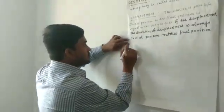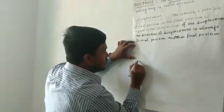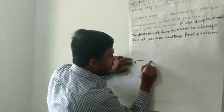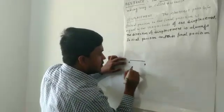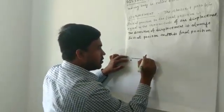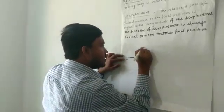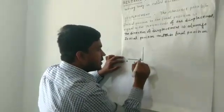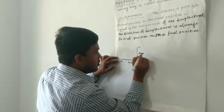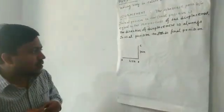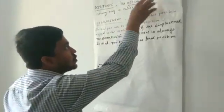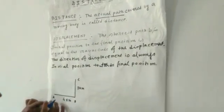Suppose there is a student. A boy starts his journey from point A and reaches point B by 4 km towards east. And then after, reaches from B to C by 3 km. So according to our definition, what is the value of distance? Distance means the actual path covered by a body.